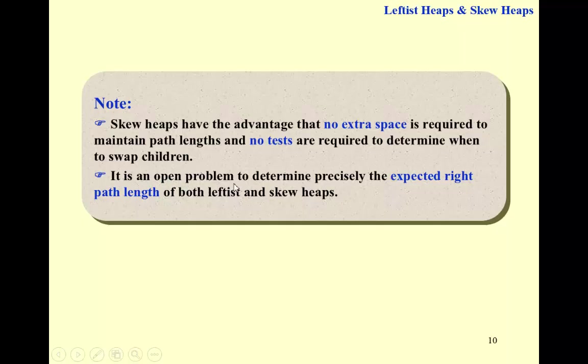Another thing is, it is still an open problem to determine precisely the expected right path lengths of both leftist and skew heaps. What we do know now is that for a leftist heap, the worst case of the right path lengths is big O of log n. But the expected right path lengths, expected number is some kind of average number, but it's not clear about the average case.